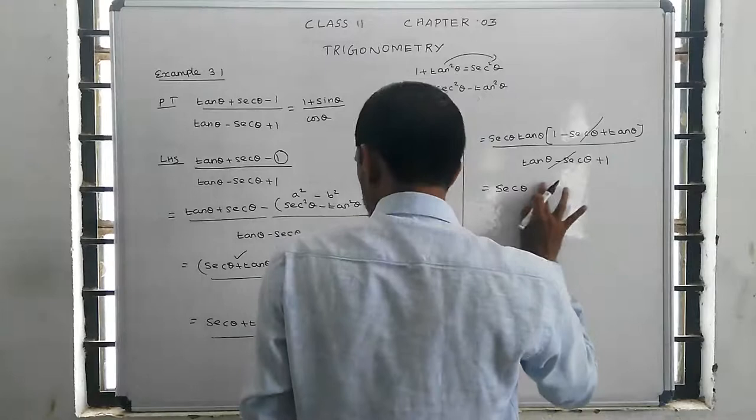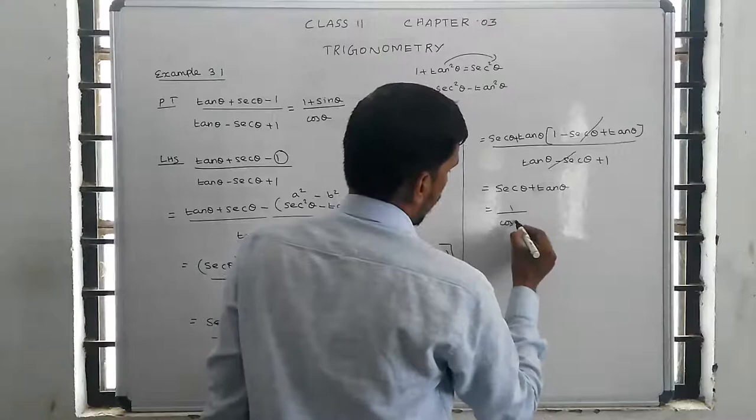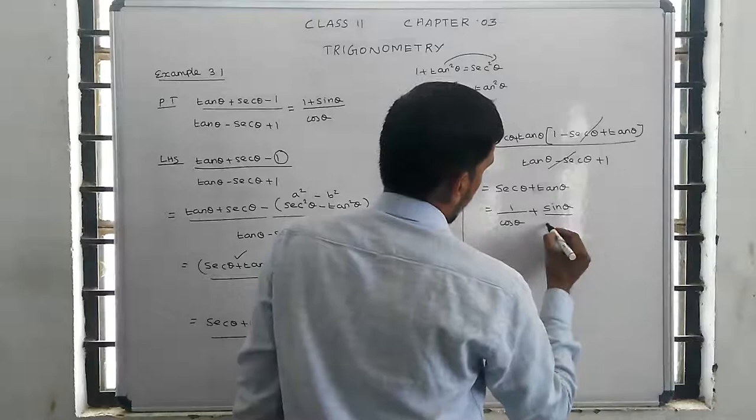The common factors cancel out, leaving secant theta plus tan theta. Secant theta plus tan theta — here secant theta is 1 divided by cos theta, plus tan theta which is sin theta divided by cos theta.